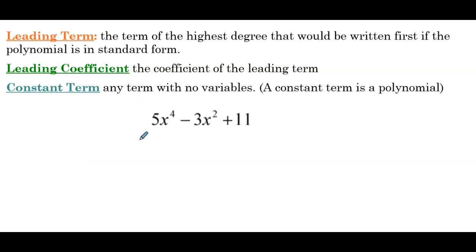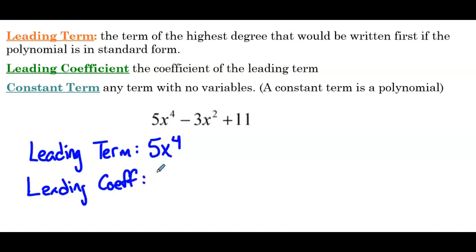So in this example, 5x⁴ - 3x² + 11, it is in standard form. This is an example that we looked at in a previous slide. So then the leading term is the term that comes first. So that's 5x⁴. That means the leading coefficient, I'm going to abbreviate that, is 5.